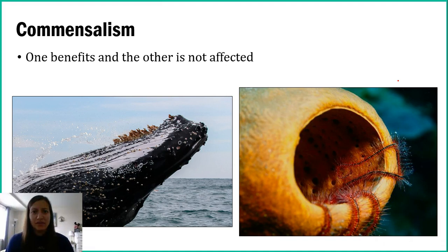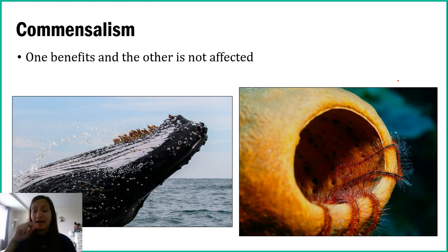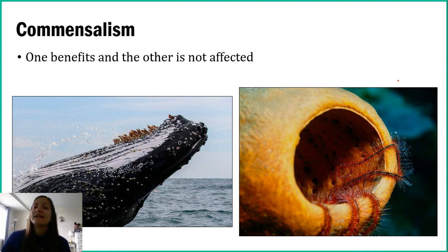Typically with commensalism, the best-defined examples in the scientific world involve the unaffected organism providing some sort of habitat for the other organism, and that other organism benefiting because they have this habitat to live in or to hide from predators. If you can find an organism providing habitat to another, more than likely it's going to be commensalism.